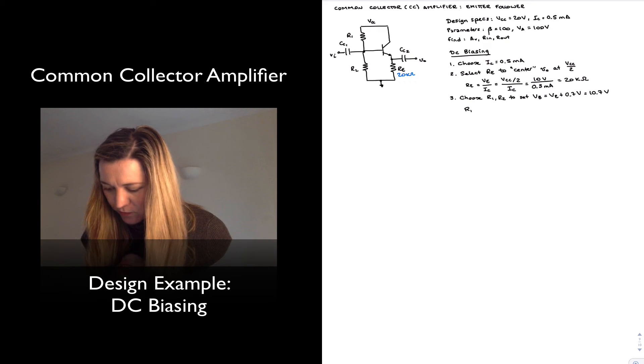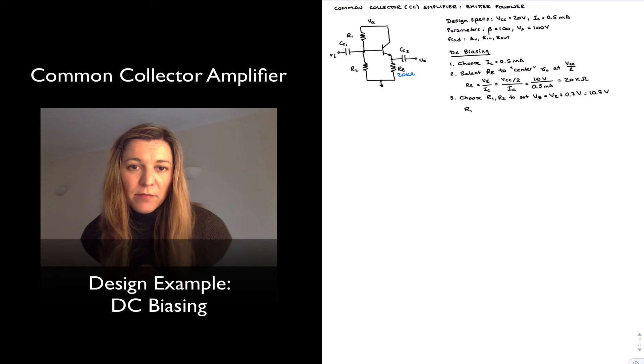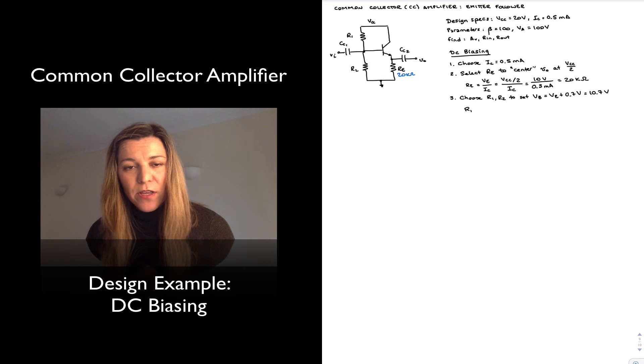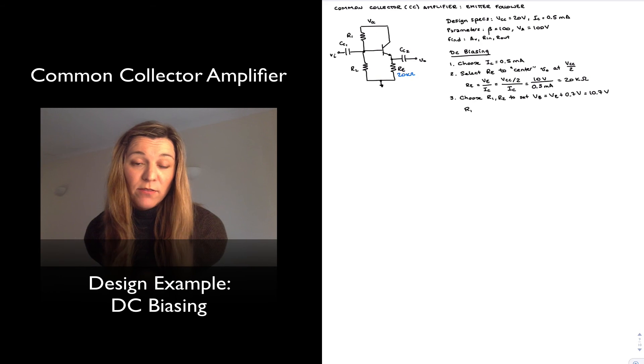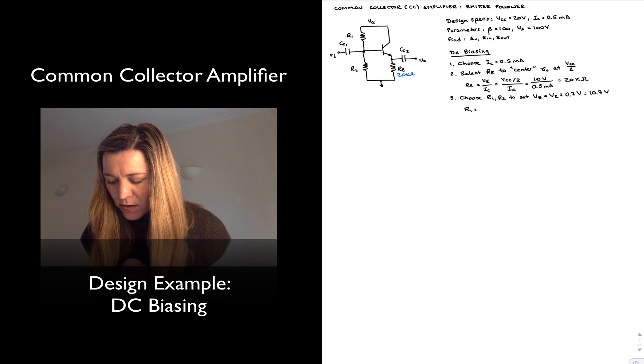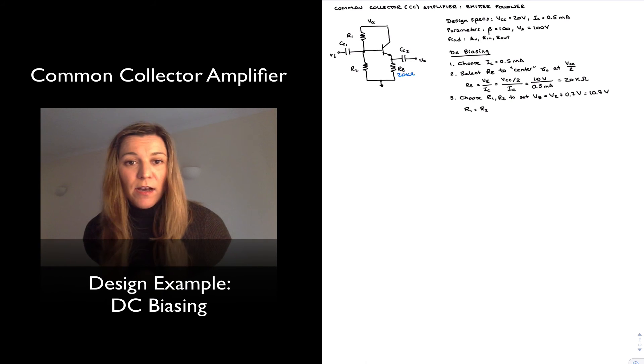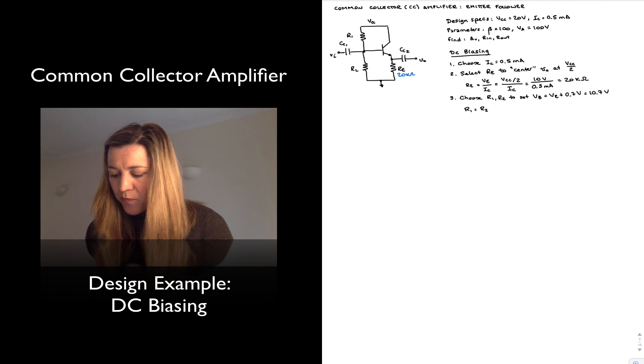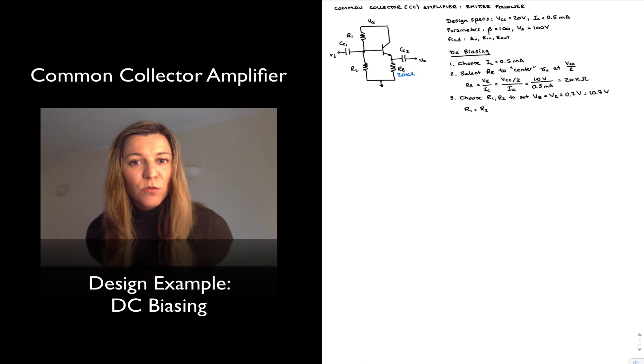And so for simplicity, I'm just going to make R1 equal to R2. What that's going to do is give me a voltage divider with two equal resistors. The voltage is going to split equally between the two. So if I pick R1 equal to R2, that's going to give me a base voltage of 10 volts, not 10.7 volts. But what I gain in simplicity is worthwhile.